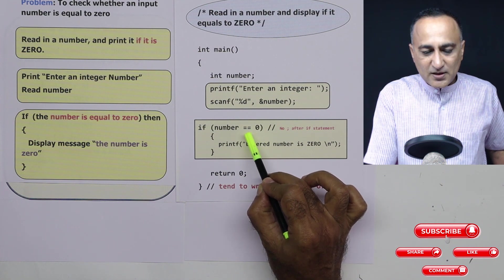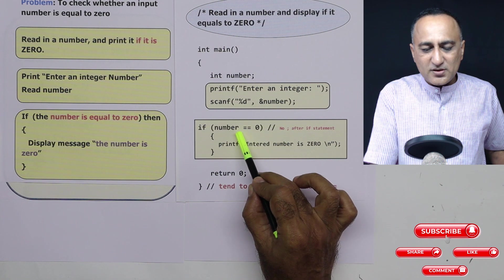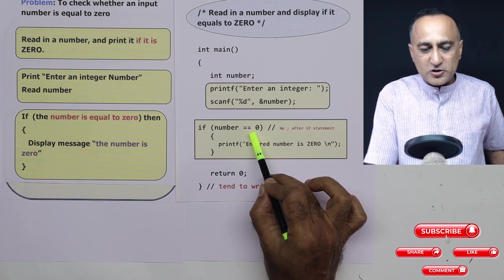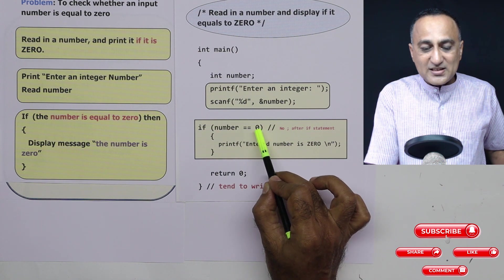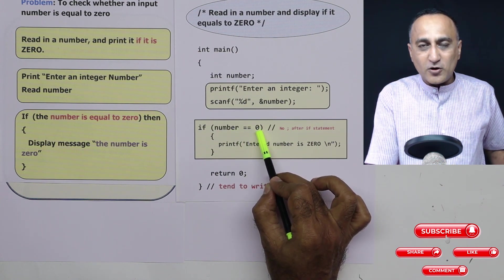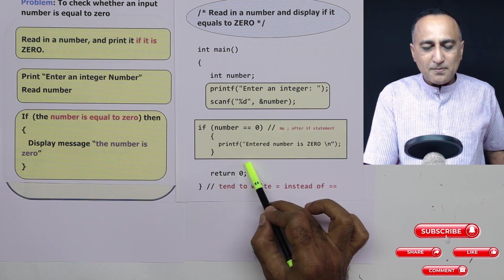So here if you see this is an example of a boolean expression because it's going to be true or false. Since in this case, let's say we entered the number zero, this condition would have been true or non zero. Suppose I had entered let's say five, five is equal to zero would have been false and it would have not printed any message.